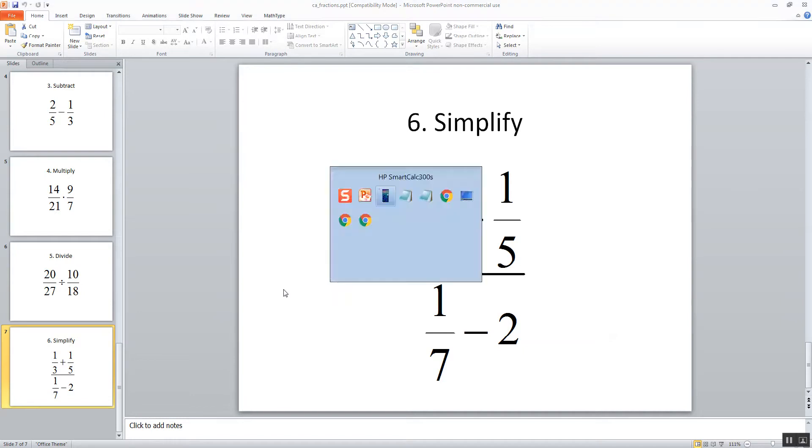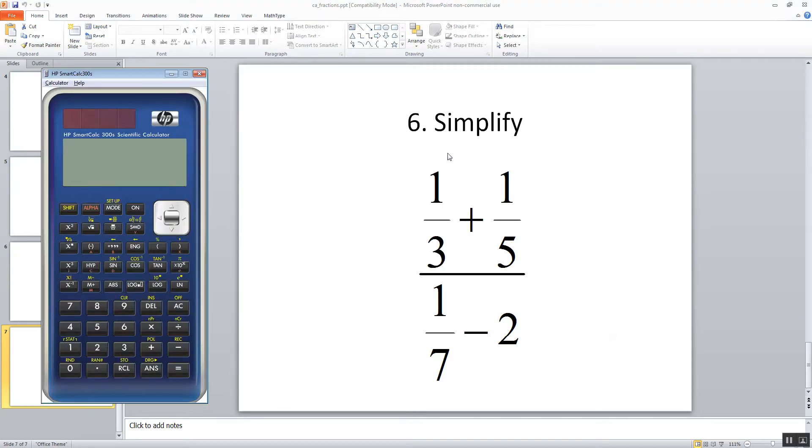Okay, one more. This is a complex fraction, a fraction inside of a fraction. The key to that is put parentheses around the top, parentheses around the bottom, and we plug it in. So I'll do a beginning parentheses, 1 divided by 3, plus 1 divided by 5, closing parentheses, divided by beginning parentheses, 1 7th. So 1 divided by 7, minus 2, and then closing parentheses, and then equals. And it gives us negative 56 over 195.